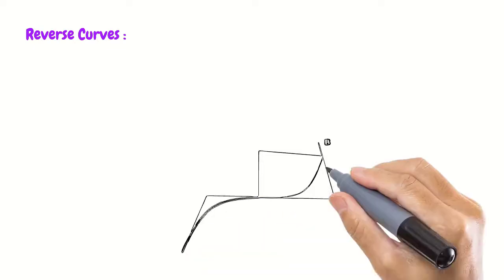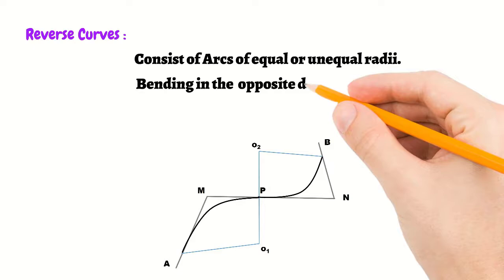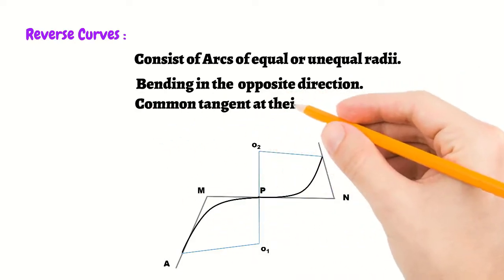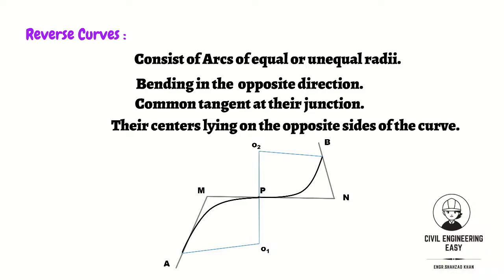Reverse curve consists of two arcs of equal or unequal radii bending in opposite directions with a common tangent at their junction. Their centers lie on opposite sides of the curves. The reverse curve is shown in the figure.